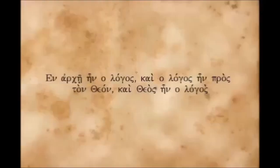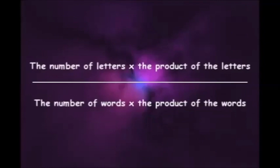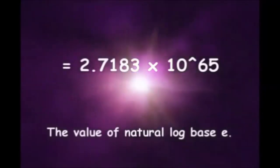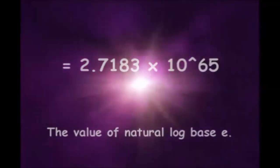But look what happens when we apply this exact same formula to the verse. The number of letters multiplied by the product of the letters divided by the number of words multiplied by the product of those words. This time our equation generates 2.7183 times 10 to the 65th power, which happens to be the value of e, the natural log base, to the fourth decimal place as well.